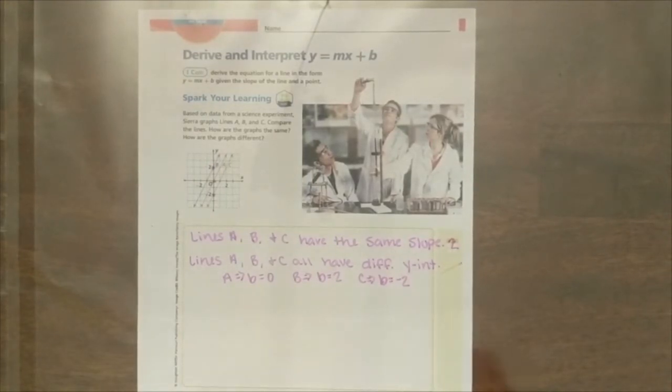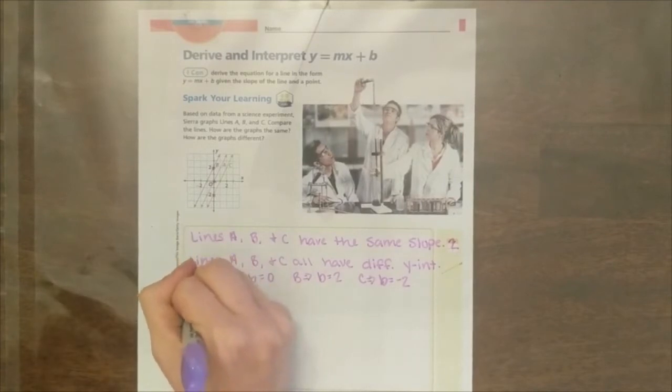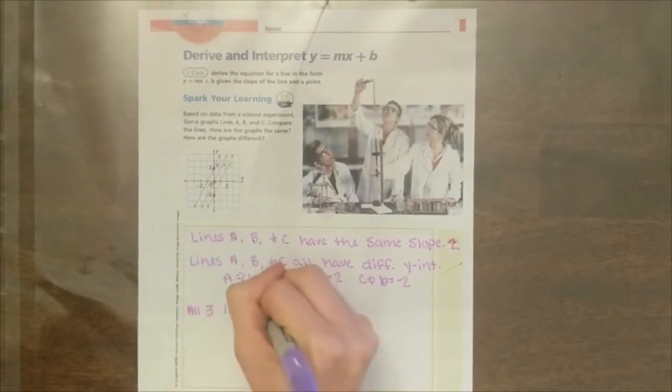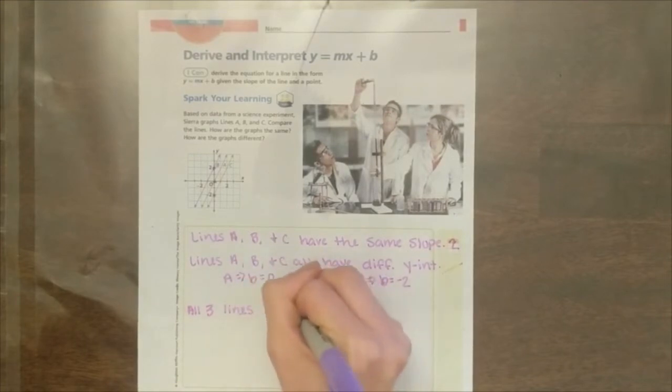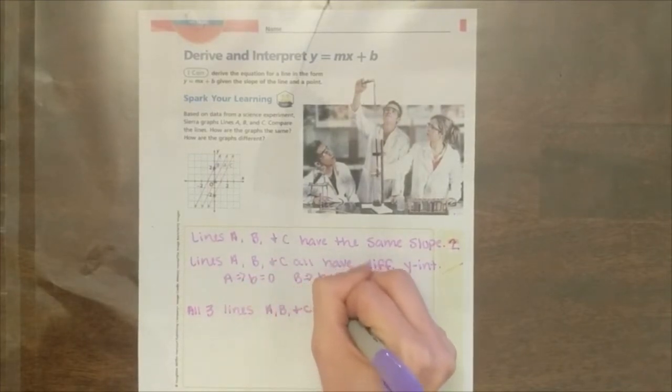Now, if we look at each line, I know that they're never going to cross. There's a vocabulary word that classifies lines that are never going to cross. This vocabulary word is parallel lines. Parallel lines will never cross. They have the same slope and different y intercepts. So our conclusion can be all three lines, A, B, and C are parallel to one another.